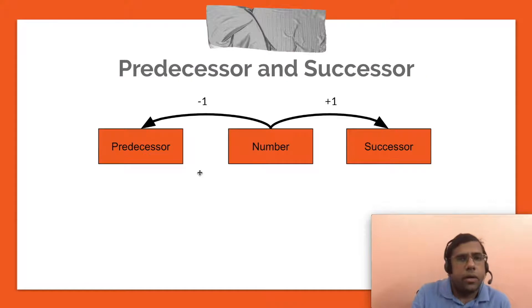Predecessor of a number is simply the number that comes before. So if from a number, if you subtract one, you get a predecessor. To get predecessor of a number, just simply subtract one. To get a successor, just add one.